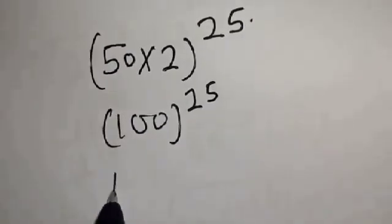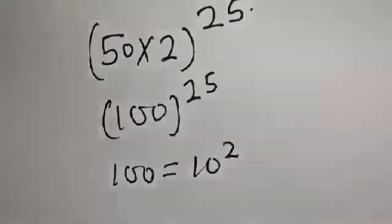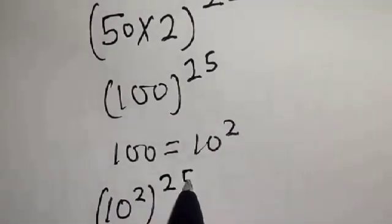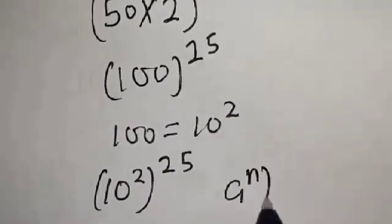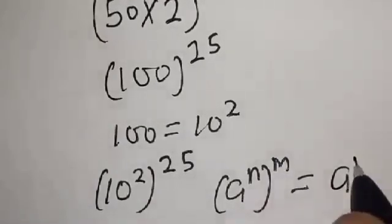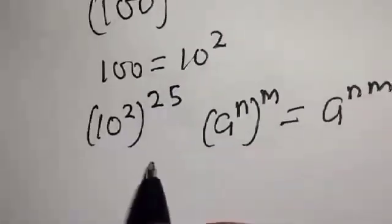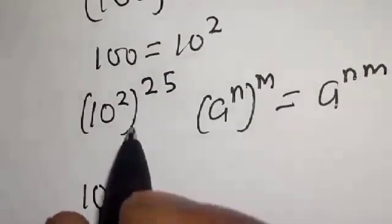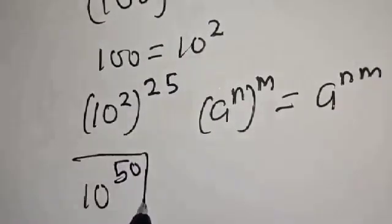Remember that 100 is equal to 10 squared. So we have 10 squared raised to power 25. And recall that if you have a raised to power n raised to power m, that is the same as a raised to power n times m. Therefore our final answer is 10 raised to power 25 times 2, that is 10 raised to power 50. That is our final answer.